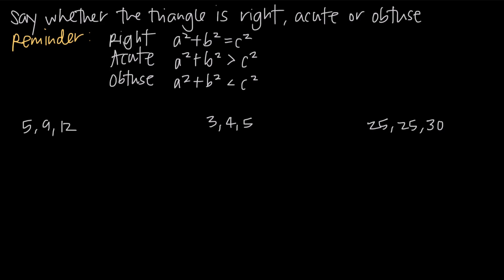In this video, we're going to be talking about Pythagorean inequalities. Pythagorean inequalities are just an extension of the Pythagorean theorem, which is a squared plus b squared equals c squared. That Pythagorean theorem applies only to right triangles, which means triangles that include a 90 degree angle.